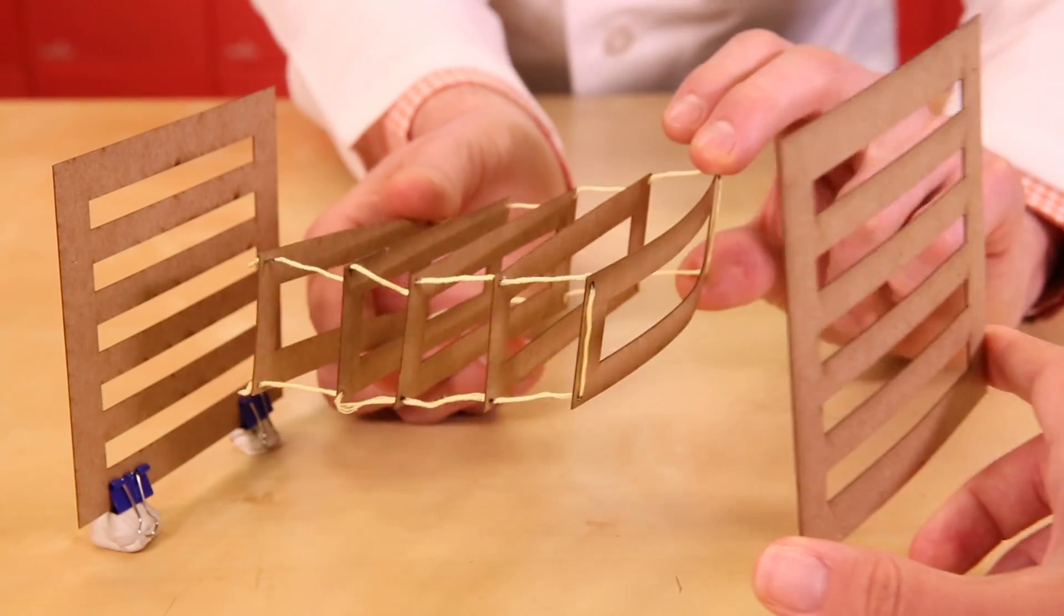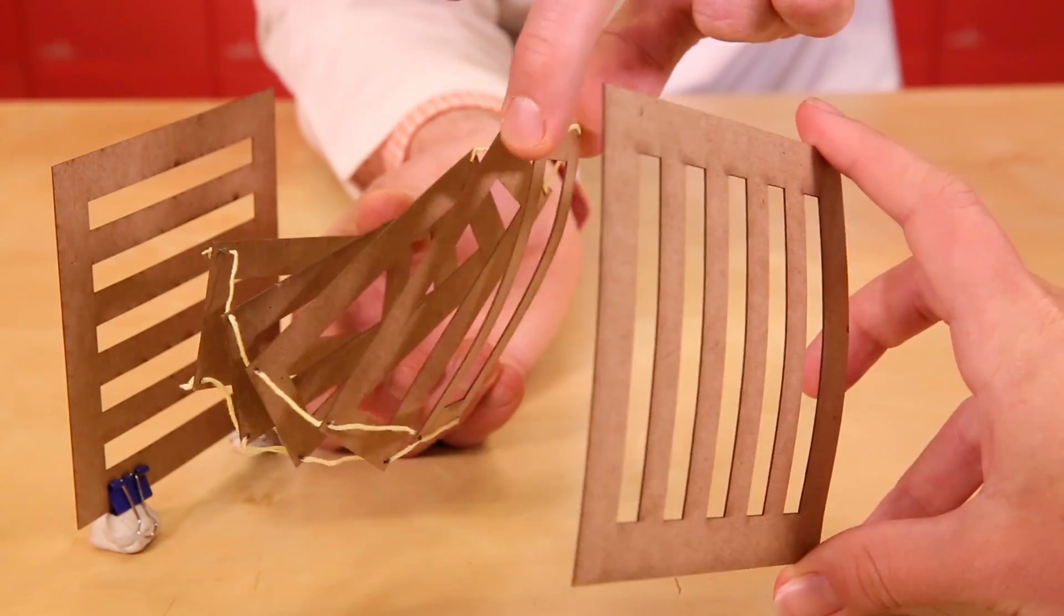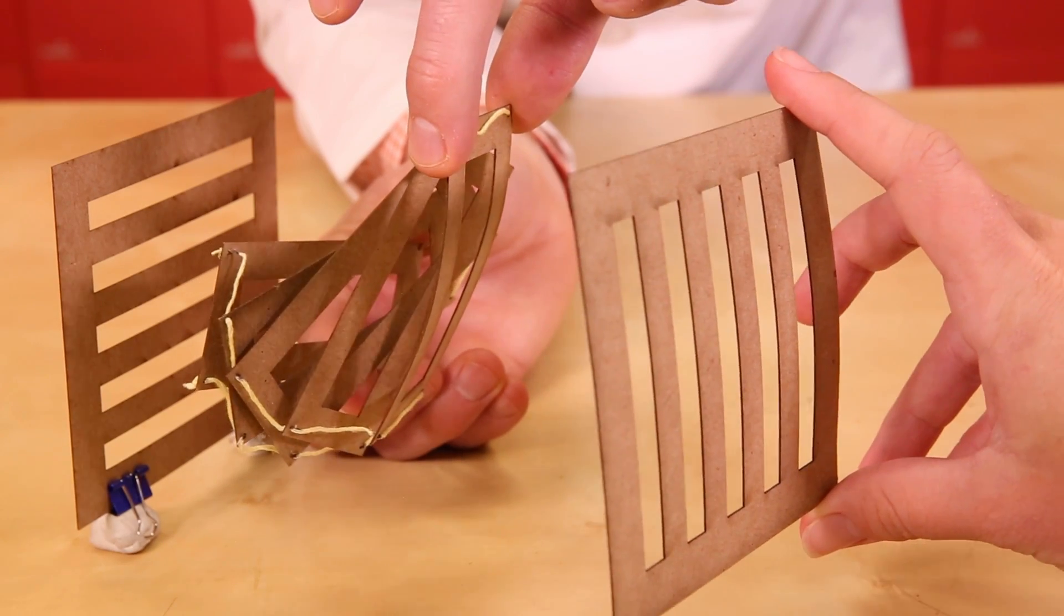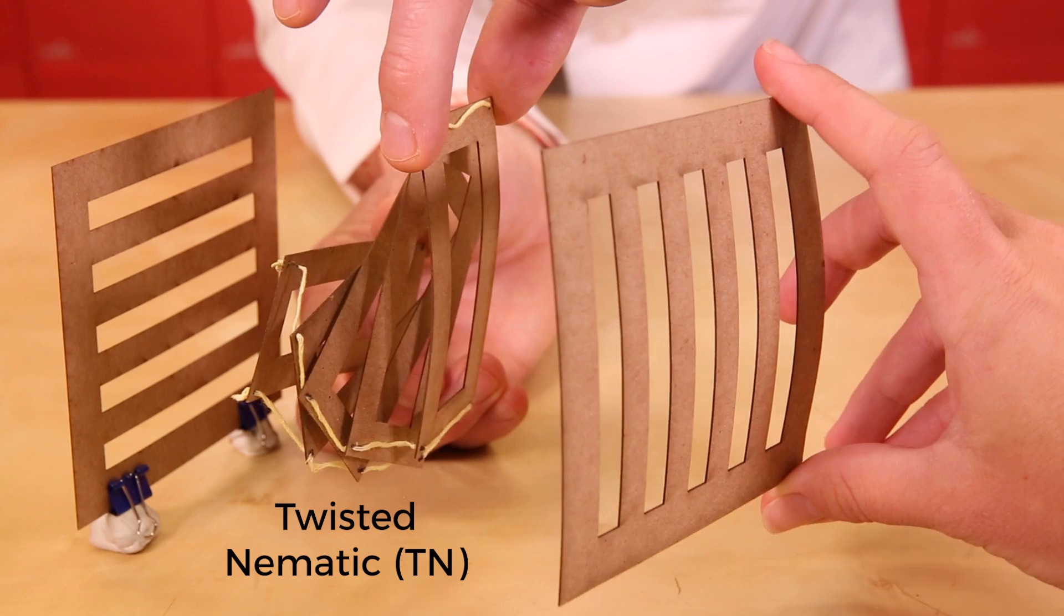In 1911, French physicist Charles Victor Mauguin found that he could sandwich nematic liquid crystals between two polarizers, twist one to be 90 degrees of the other, and light would be transmitted through the whole thing. This is where we get the term twisted nematic, or TN for short.